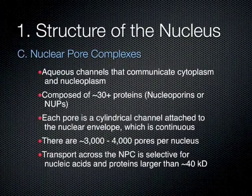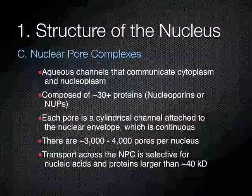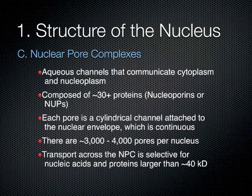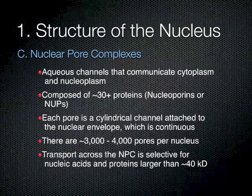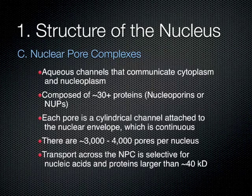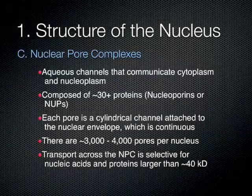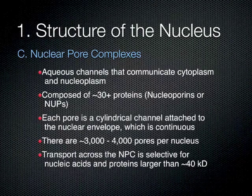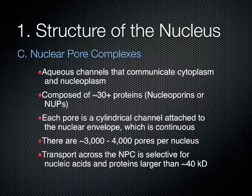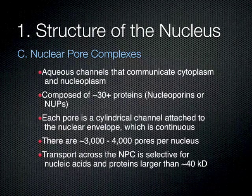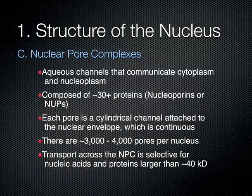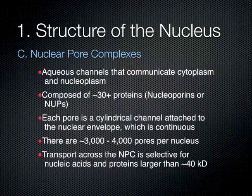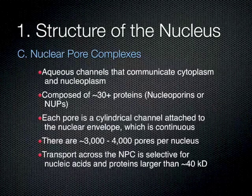In summary, the nuclear pore complex is an aqueous channel communicating the cytoplasm and nucleoplasm. It is composed of around 30 proteins known as nucleoporins or NUPs. Each pore is a cylindrical channel attached to the nuclear envelope, and there are about 3,000 to 4,000 pores per nucleus. Transport across the nuclear pore complex is selective — both for nucleic acids and for proteins larger than about 40,000 Daltons in molecular weight.